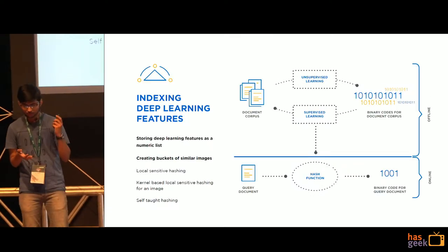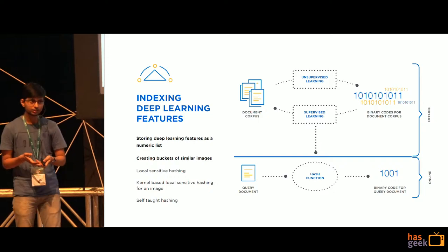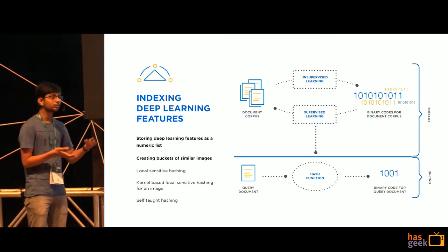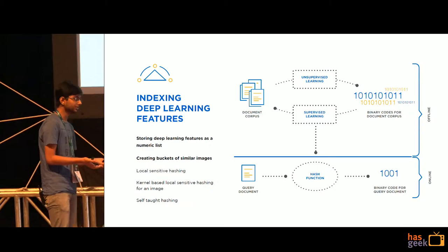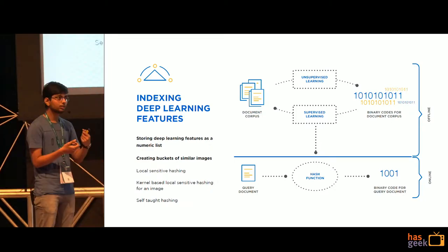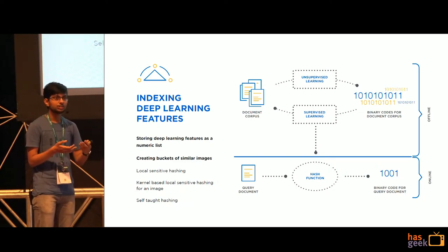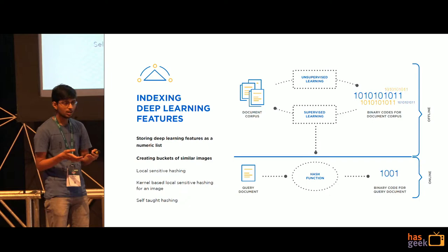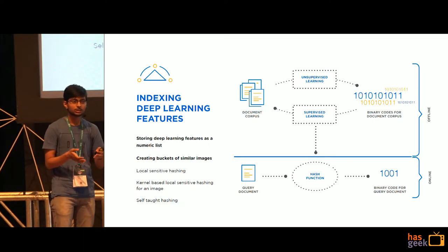The first task was: how are we going to use Solr, which is meant for natural language processing, to also store deep learning features? We extracted the final-layer feature vector from AlexNet, Inception, and VGGNet and indexed it as a multi-value numerical list. While indexing, we also wanted to group products which share similar-looking images in terms of deep learning features.